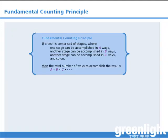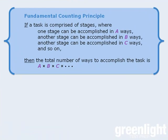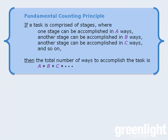Here's how the fundamental counting principle works. If we have some task that is made up of stages, where one stage can be accomplished in A ways, another stage in B ways, another stage in C ways, and so on, then the total number of ways to accomplish the entire task will be equal to the product A times B times C, and so on.